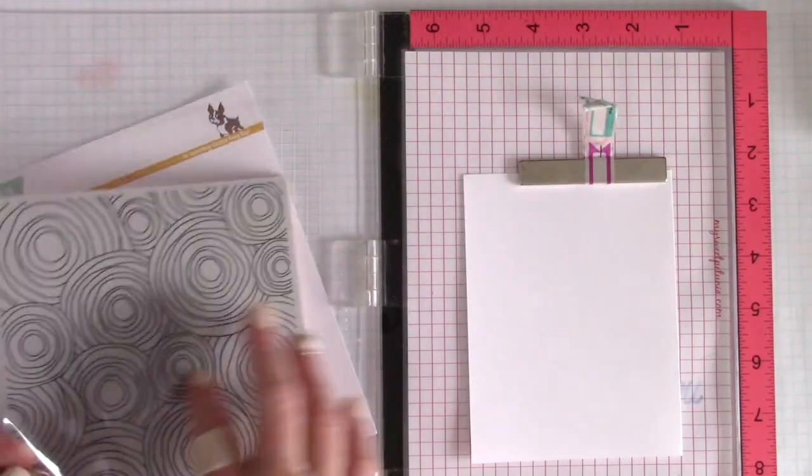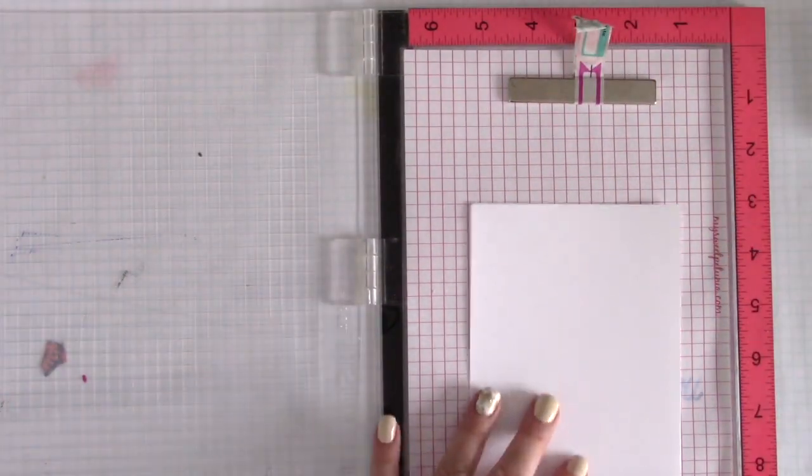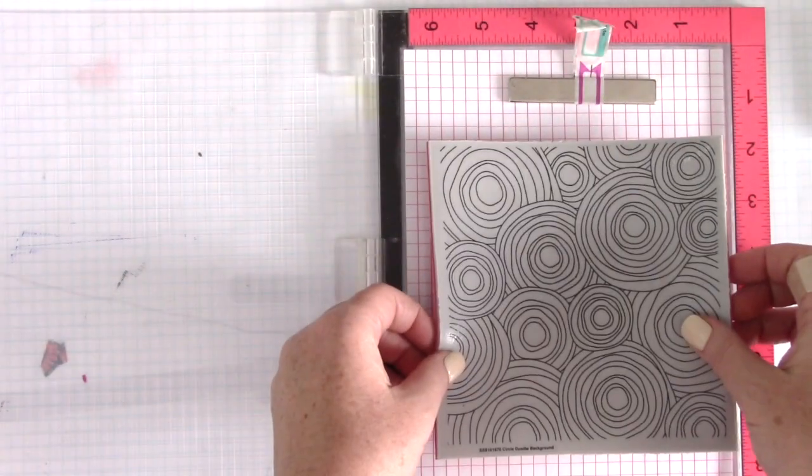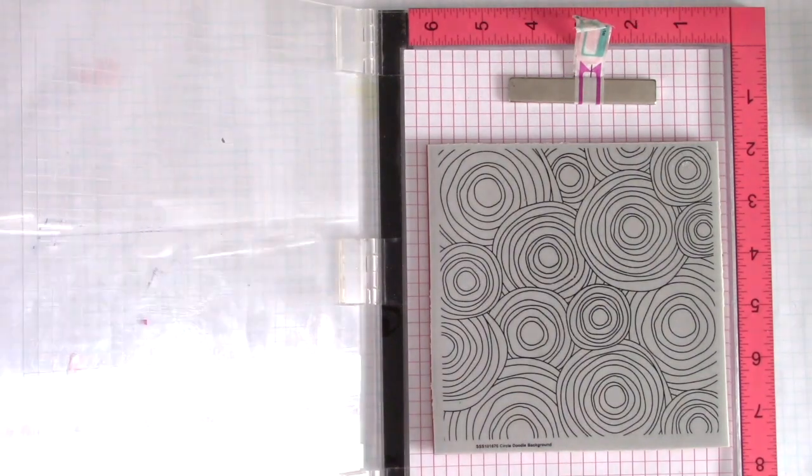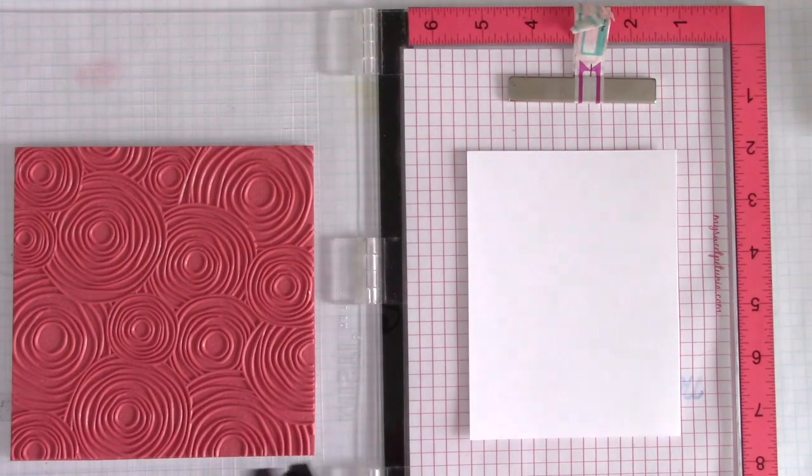This is a cling stamp, so you see I took my foam out of the MISTI and then I am going to put my card stock panel, which is about four and a quarter by five and a half, in the middle of the MISTI and I am going to close the door with the stamp attached.